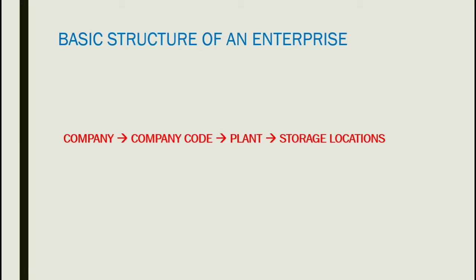Here you can see the basic structure of an enterprise: the company and company code. A company code is a unique code assigned to the company. Each company has different plants — for example, a production plant and a warehouse plant. Each plant has multiple storage locations; for example, raw materials are kept in one storage location and finished goods in another.